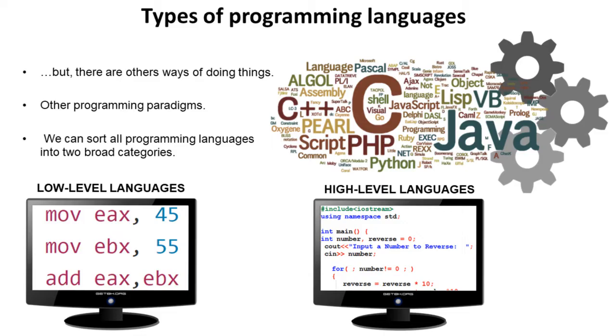But there are other ways of doing things. There are other programming paradigms. Now at a very top abstract level we can sort all programming languages into two broad categories. They are low level languages and high level languages. And it's a high level language which you will have been using to learn to program.